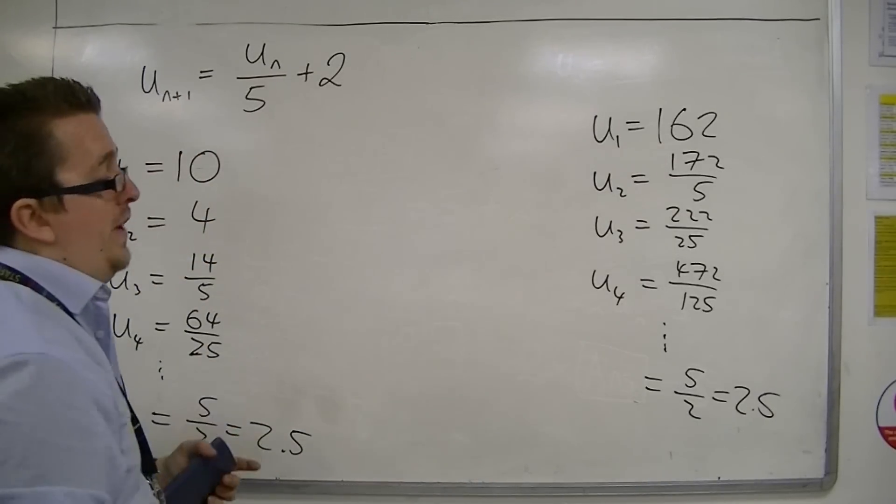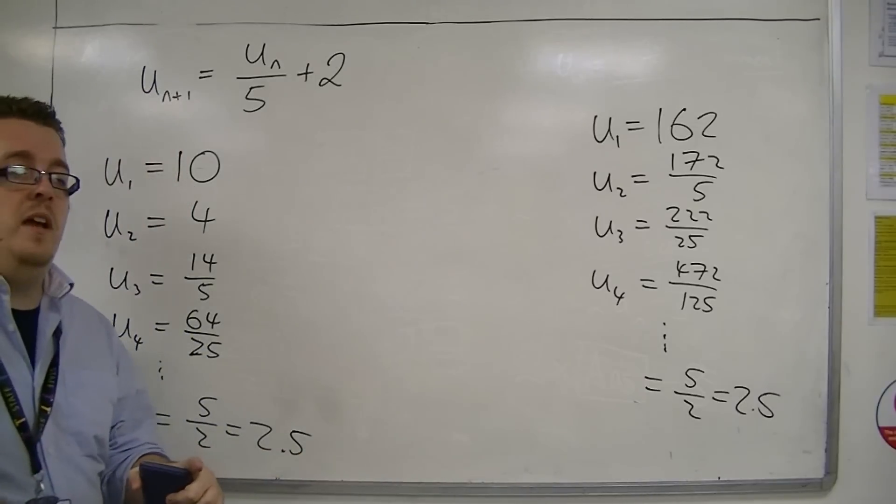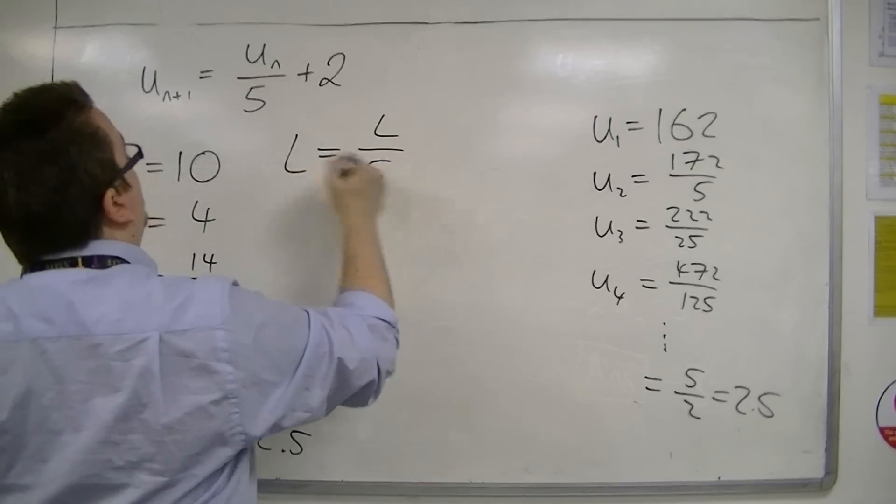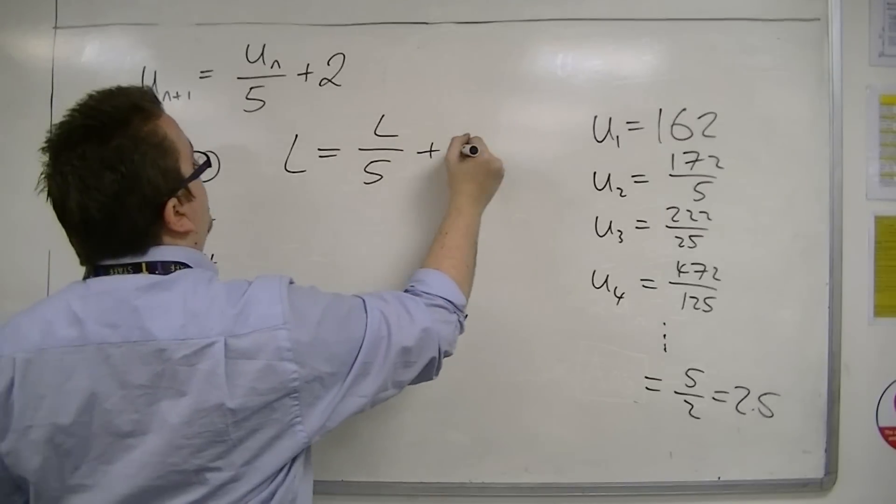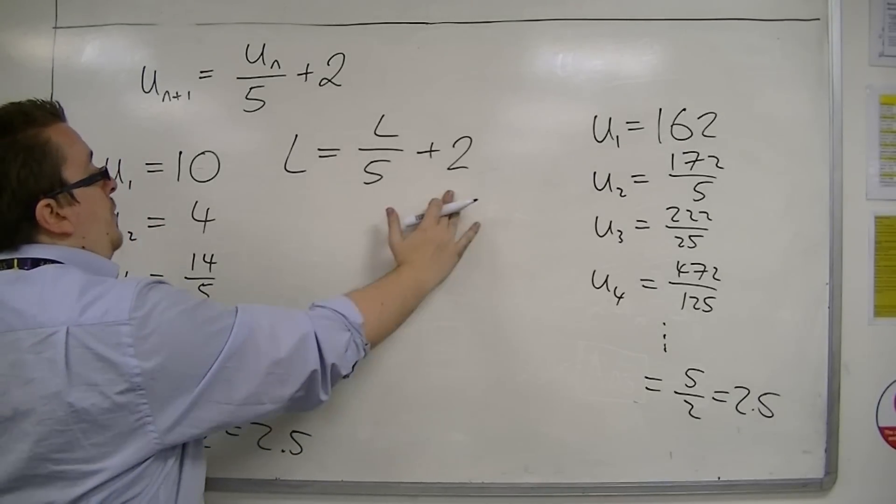The concept is that the number I'm putting into the sequence should be the same as the number I'm getting out. That is why I used L as the letter to replace UN and UN plus 1. It is the limit of the sequence. This is the equation I want to solve.